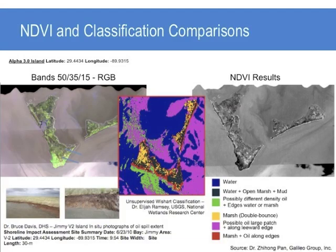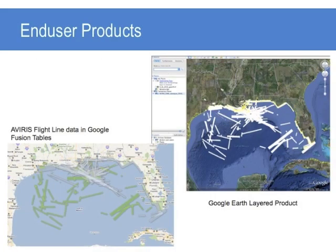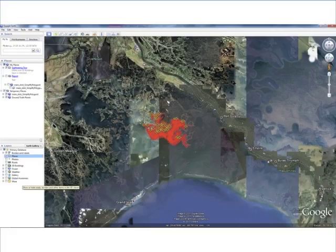The NDVI results from the Galileo Group image processing show areas of stressed vegetation along the same areas as these photos. With reference to the unsupervised Wishart classification conducted by Dr. Elijah Ramsey of USGS, our NDVI results display the stressed and dead vegetation along the southernmost portion of one of the Barataria Bay islands, matched with DHS field report surveys. End user products include AVIRIS flight line data and Google Earth layered products over processed flight lines. The unsupervised classification of potential oil spill areas from UAV SAR data is overlaid in Google Earth, with yellow circles and black crosses depicting DHS ground truth points.